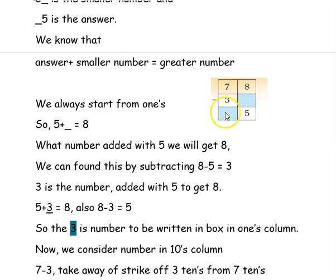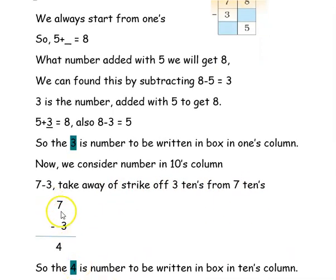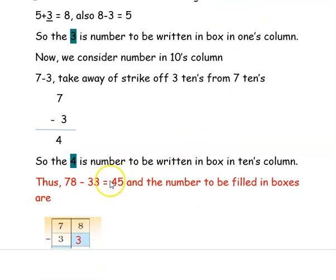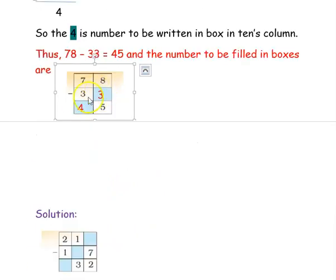Now we go to the tens column. In the tens column, it is 7 minus 3. So we take away 3 tens from 7 tens, giving 4 tens. So 4 is the number to be written in the tens column box. Thus, 78 minus 33 is 45. The numbers filled in the boxes are 3 in the ones column and 4 in the tens column.